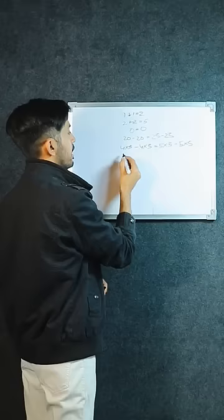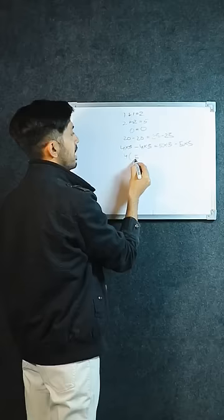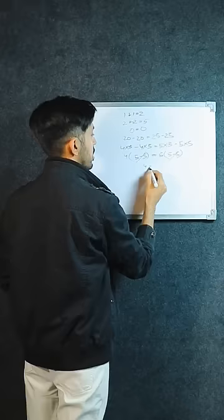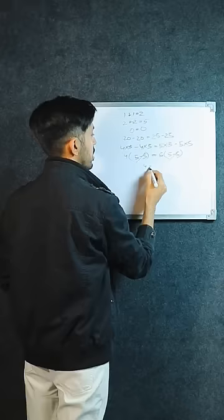We can take four out as common. Four out of the bracket, five minus five. We've added five. Both fives cancel. Four equals five. Therefore, we can say that two plus two equals five. Hence, proved.